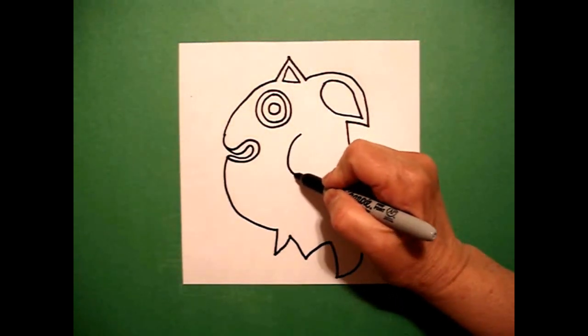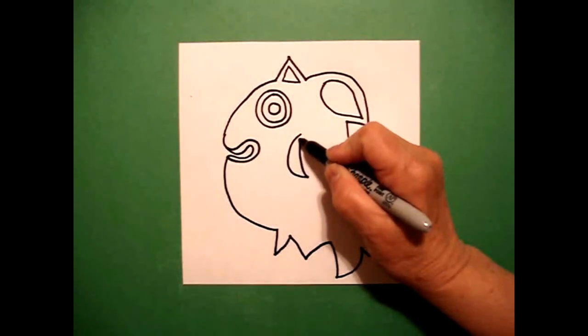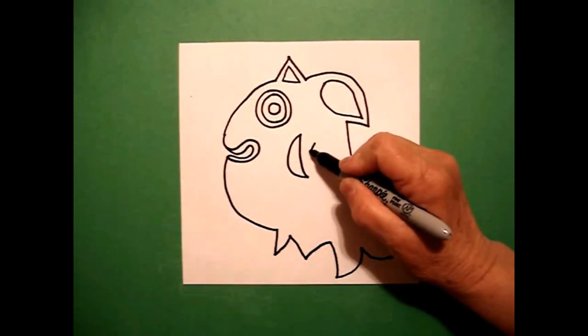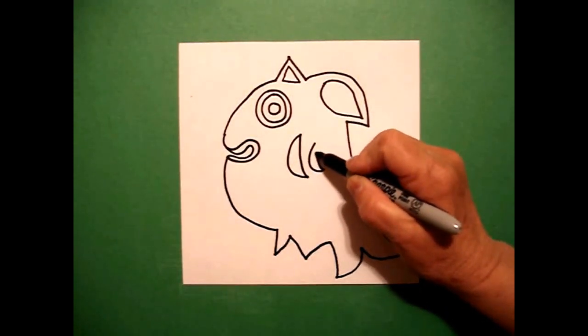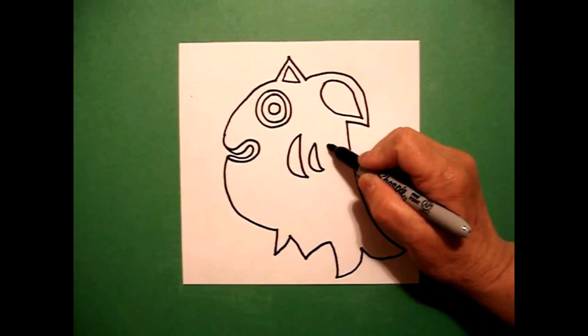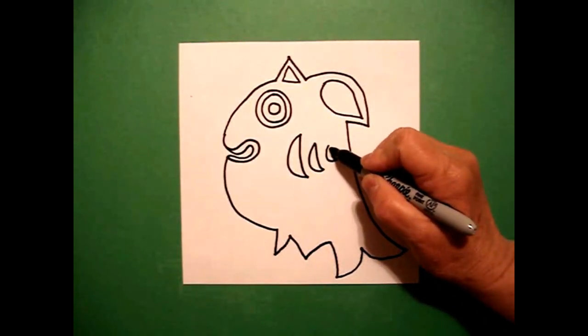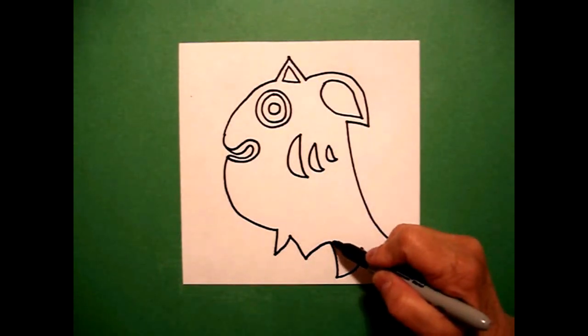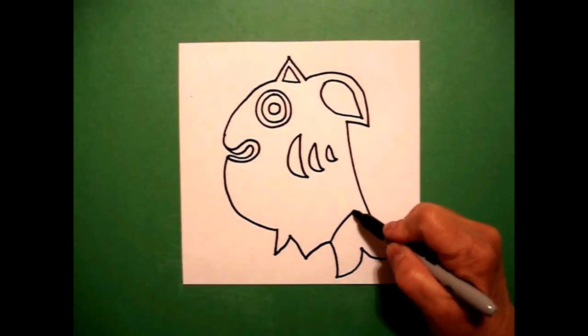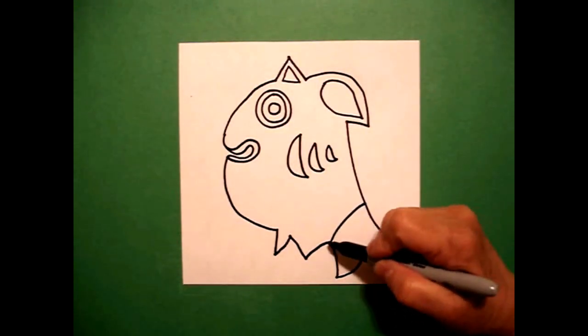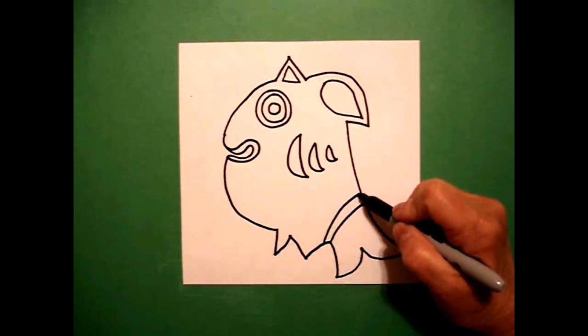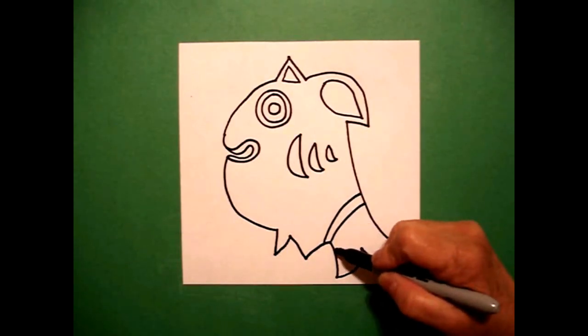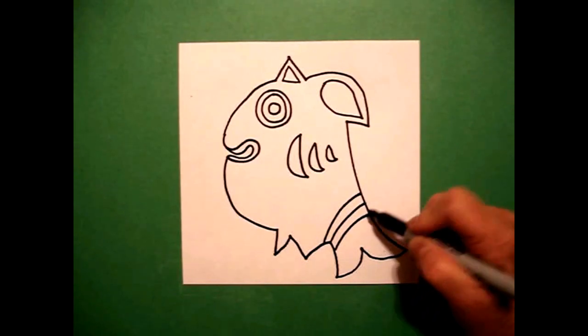I draw one curved line, curve line up, connect. A littler one, curve line up, connect. And a little curved line up, connect. Right down here, I'm going to draw a curved line up, connect. Curve line up, connect. Curve line up, connect.